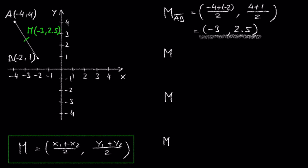What about these points C, negative 3, comma negative 1 and D, 4, comma 4?